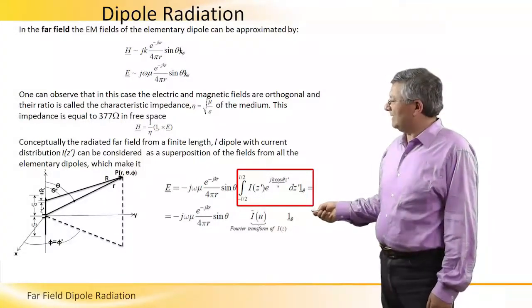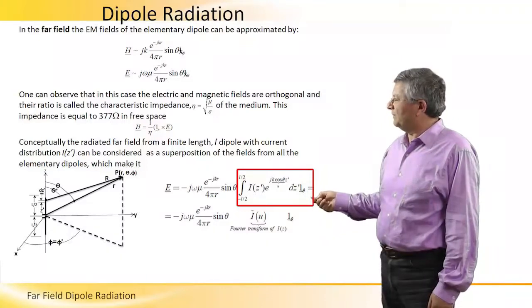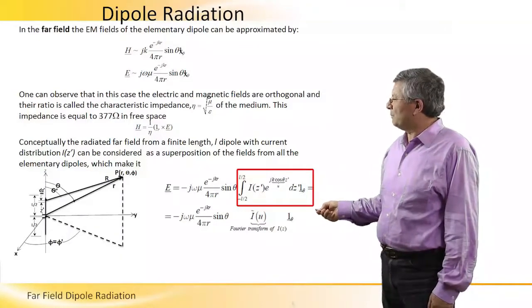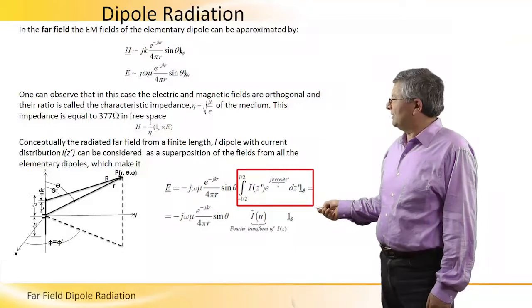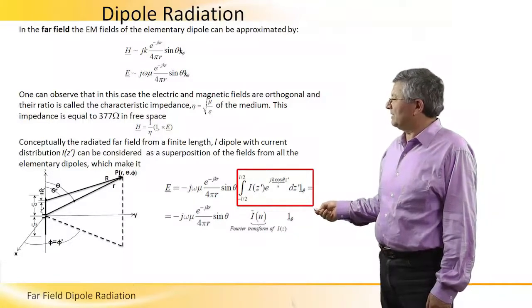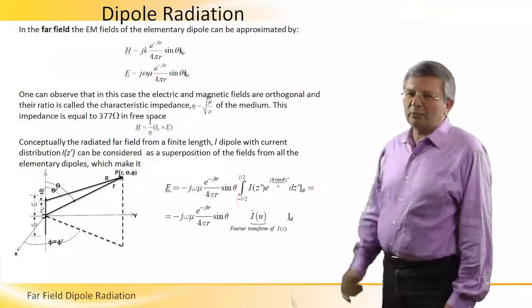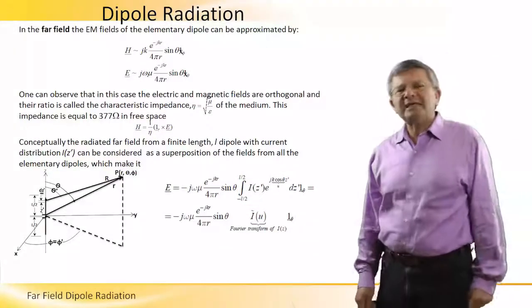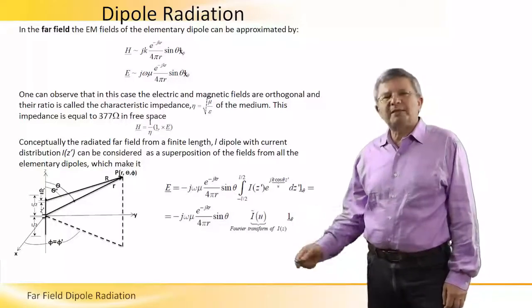Therefore, the electric field for far field approximation is proportional to the Fourier transform of the current distribution. And all that is multiplied by sine theta, which represents the radiation pattern.